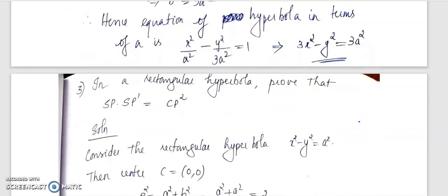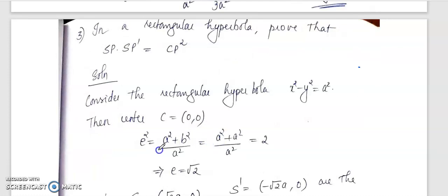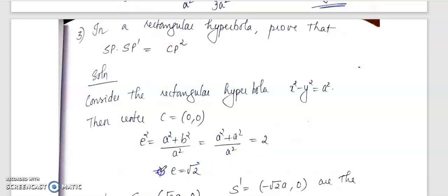The next problem: in a rectangular hyperbola, prove that SP · SP' = CP². Consider the rectangular hyperbola x² - y² = a², which is of the form x²/a² - y²/a² = 1, so A² = B². The eccentricity is e² = (a² + a²)/a² = 2, so e = √2. Here C is the center (origin), S and S' are the foci, and P is any point on the hyperbola.